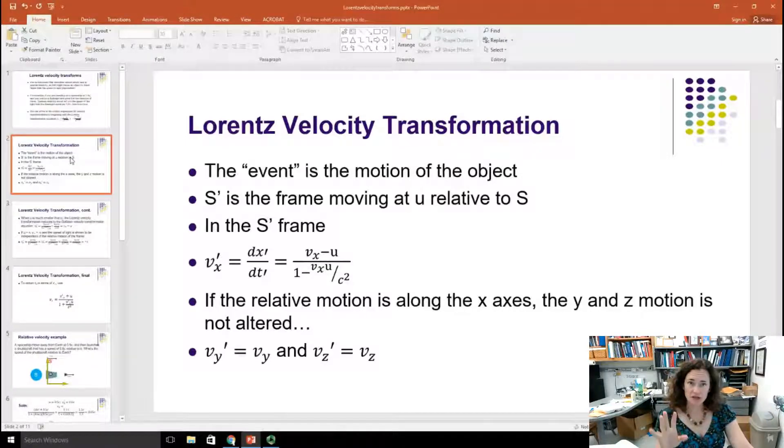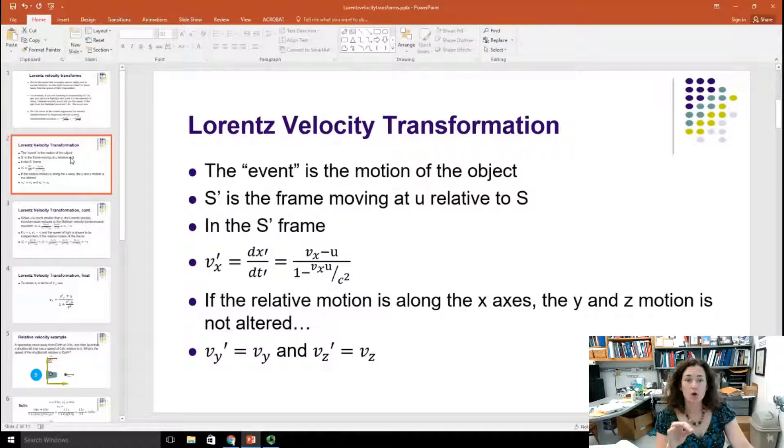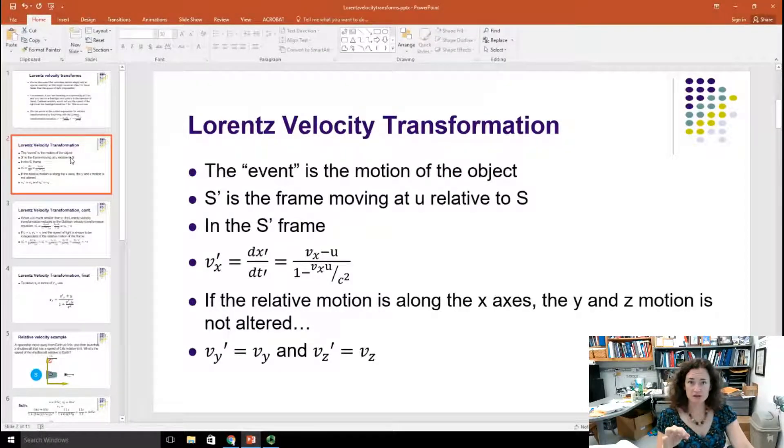Let me explain what each one of those variables in that equation actually means. So what you're doing here is you're trying to determine the speed from the moving frame. Remember, we label our moving frames the prime frames and the stationary frames the unprime frames. So we'll call S prime the frame and it's moving at a speed U along the plus X axis relative to frame S.